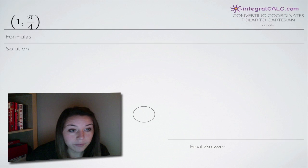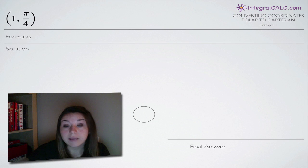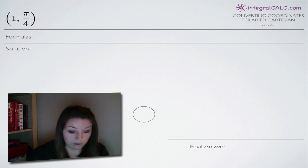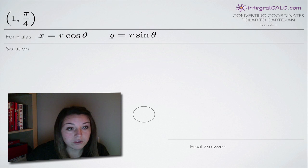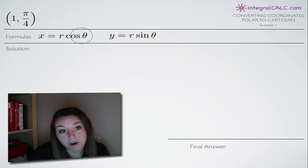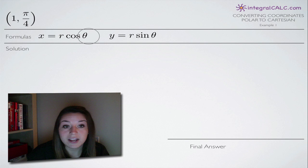With this problem, and any problem in which you're converting polar coordinates to Cartesian coordinates, you're going to be using these two formulas: x equals r cosine of theta, and y equals r sine of theta.